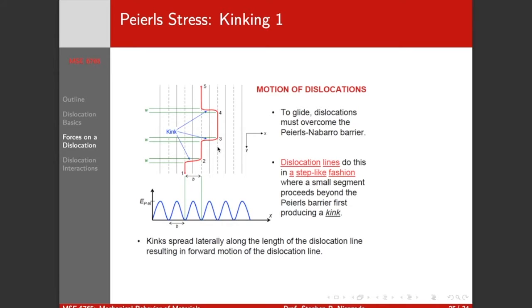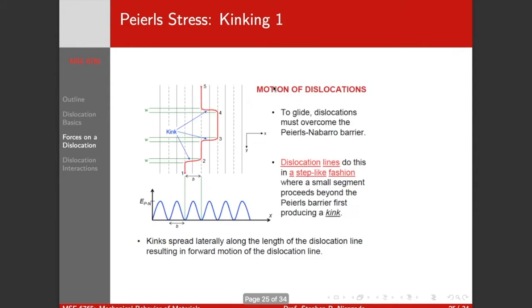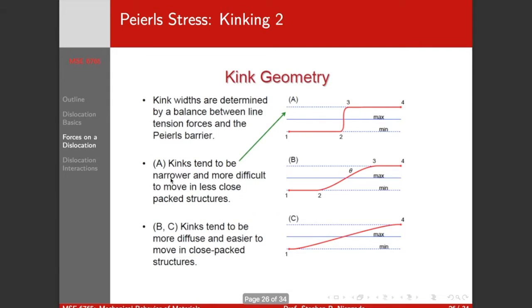Now, the kinks are distinct from jogs. Jogs are going from one plane to another. Kinks are completely in the slip plane. And then these kinks will spread laterally along the length of the dislocation. So now this portion of the dislocation will move this way, this one will move this way. And that's how the dislocation moves forward.